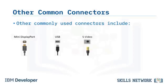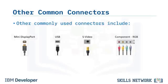Some older televisions, VCRs, and computer monitors use S cables to connect using the S-Video port. Component RGB is used to process analog video signals. These interfaces typically split video into three signals and usually have one or more additional cables for transmitting the audio signal.